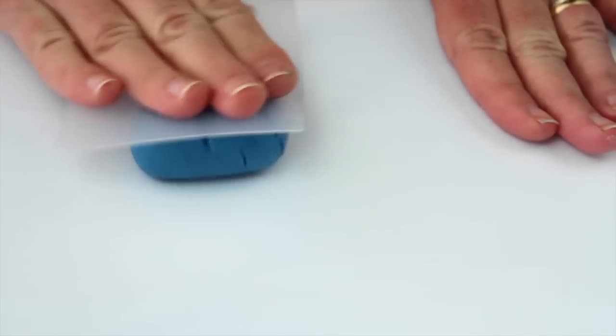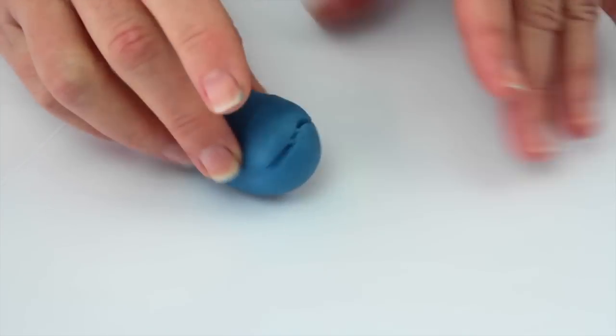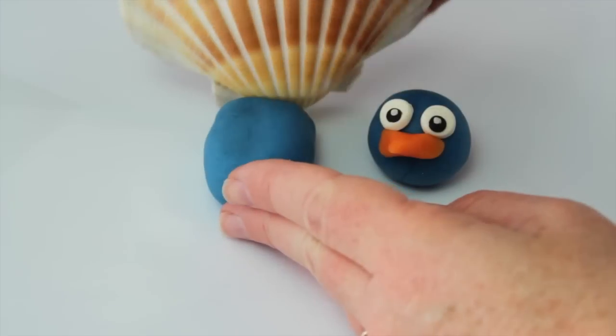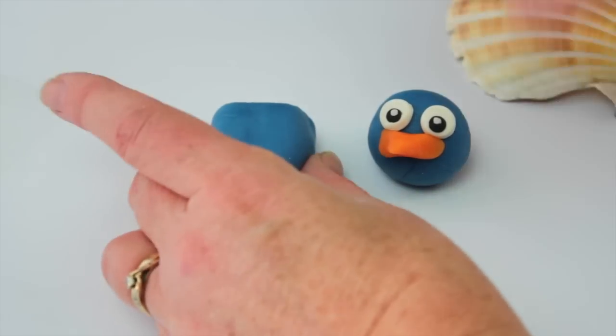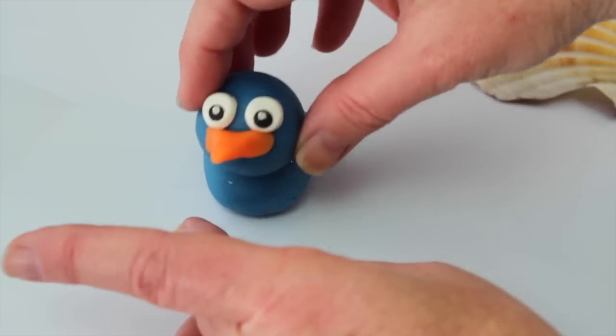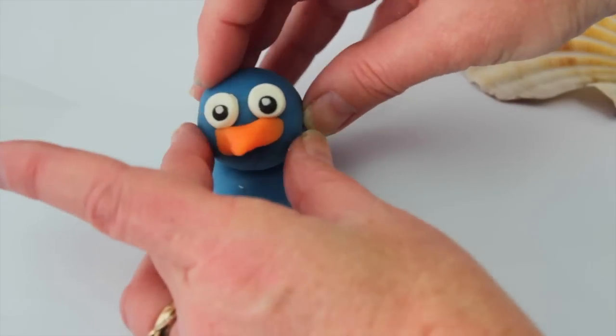Flatten the ball slightly so it forms a cylinder. Flatten the back of the body. I use the seashell to do this. With your index finger, make a small divot in the peacock's body for the head to sit on.